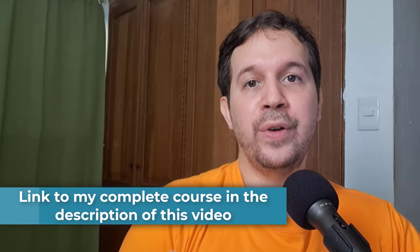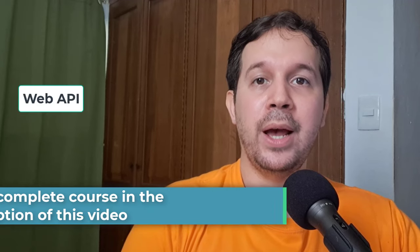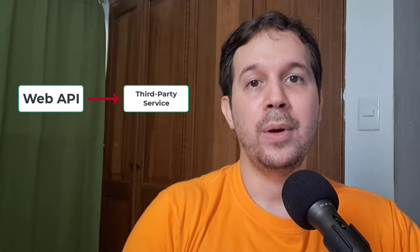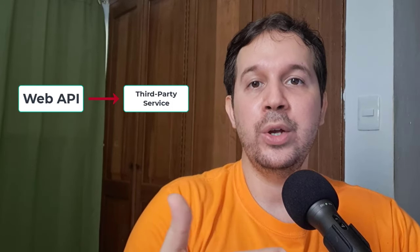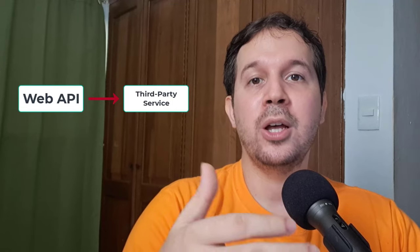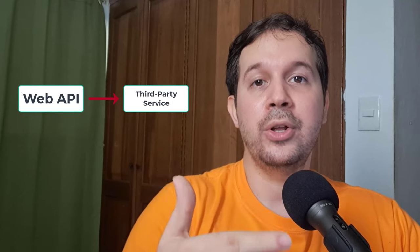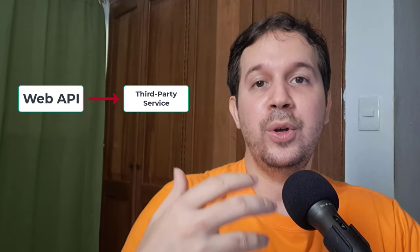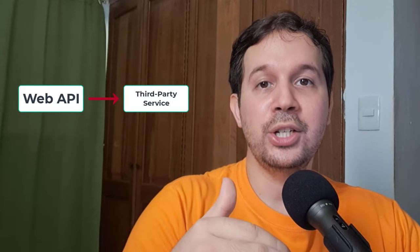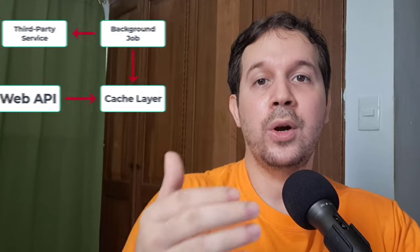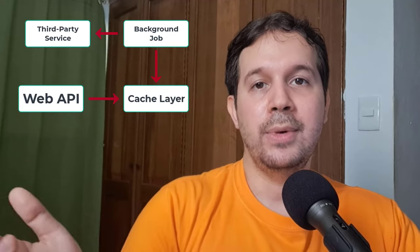In this video, we are going to see an example of a realistic background job. We have a web API that is using a third-party service. The problem is that that service is slow and it is also expensive, so every time we use it we are incurring some costs. We want our web API to be faster, and we want to retrieve the information through cache so we can save some money. We're going to create a cache layer that will be filled from a background job repeatedly.